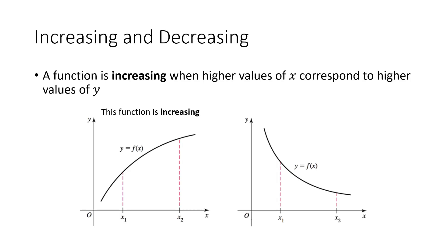A function is increasing when higher values of x correspond to higher values of y. The graph on the left is an increasing function because when I plug in a lower value of x, I get a y value — call that y1, which is just f of x1. But when I plug in a higher value of x, I get a higher y value, y2, which is f of x2. And the whole way across, as my x values go up, my y values go up. So for this entire function, this function is an increasing function.